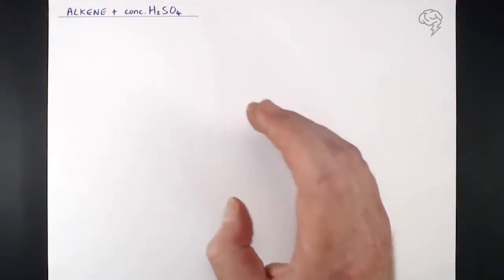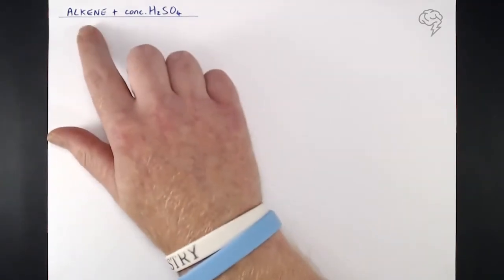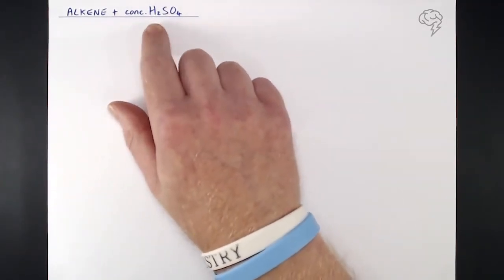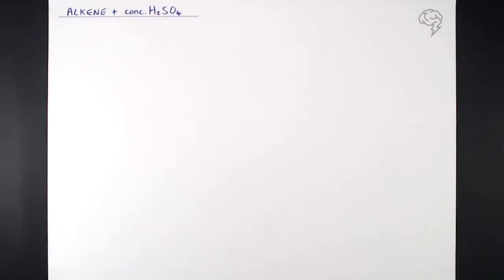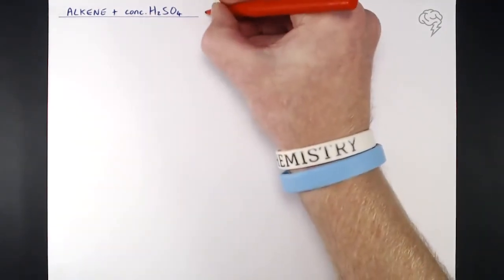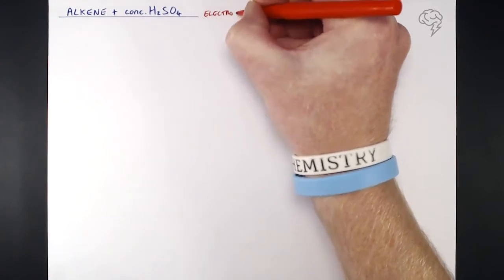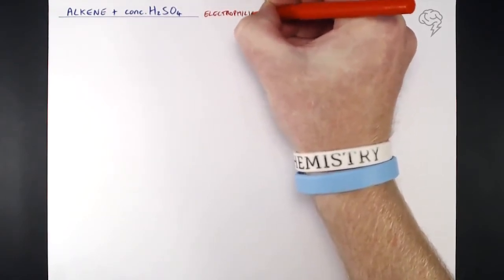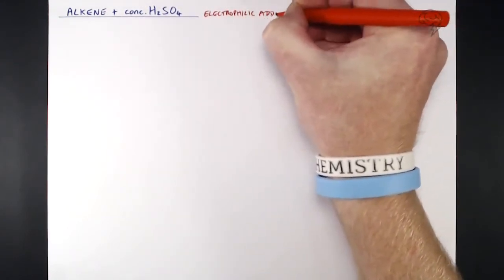In this video we're going to be looking at the mechanism for the reaction between an alkene and concentrated sulfuric acid. This is also, like adding halogen or a hydrogen halide, classed as an electrophilic addition reaction, so it's a quite similar mechanism to that of a halogen or hydrogen halide.